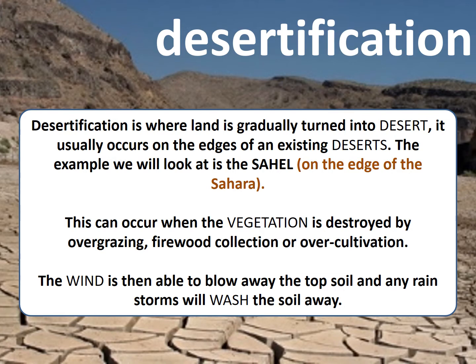Desertification happens because of a few different things, but the main reason is that any vegetation — any plants that were there, like grasses in a sort of savannah or Mediterranean-type area — any tree and grass coverage is taken away. It's removed either through animals grazing, cutting down trees for firewood, or removing the natural vegetation to use for farming.